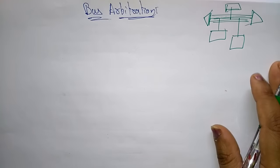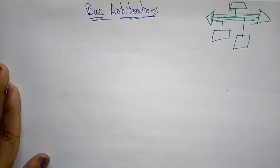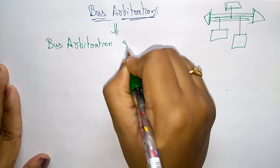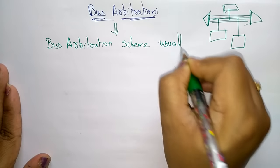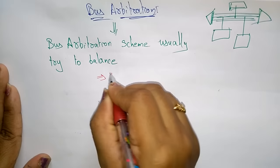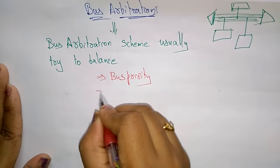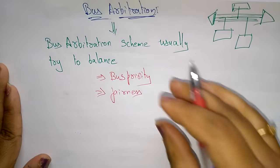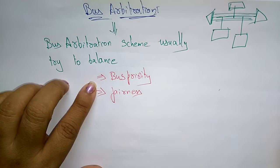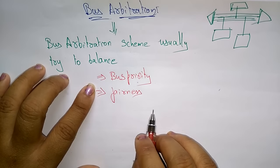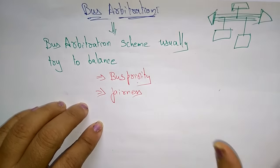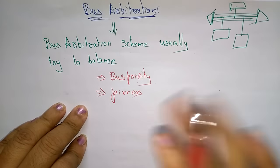The bus arbitration scheme usually tries to balance bus priority and fairness. Bus priority means the highest priority device has to be served first, then the lowest priority, and so on — that is decided by bus arbitration. Fairness means whether the arbitration is giving service to all the devices or not.